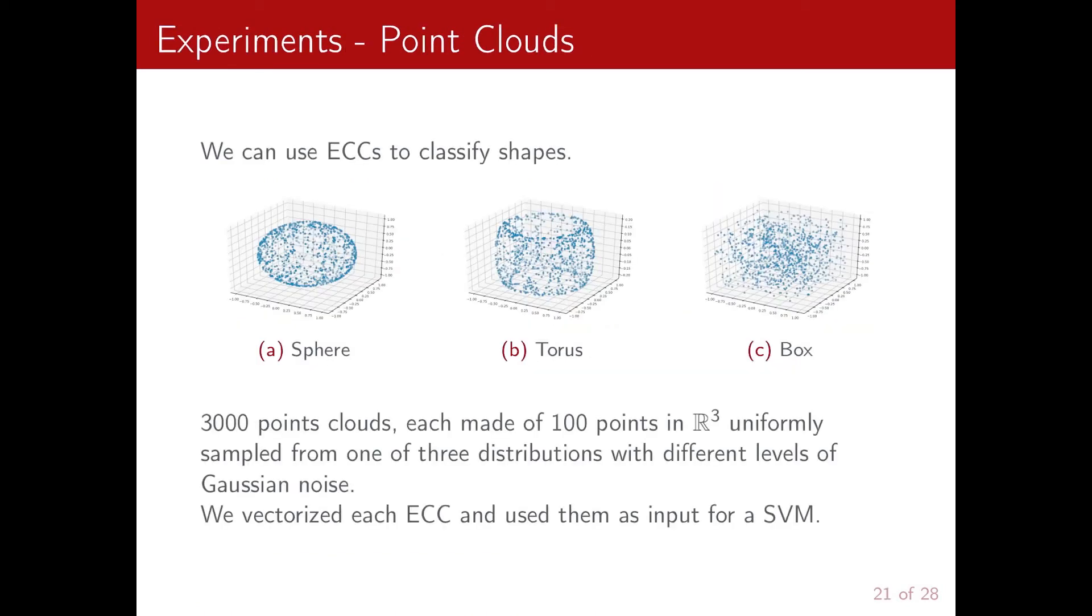So in the last minutes, I want to show you some classification experiments where we use the Euler characteristic curves as a feature. So the first one is a toy example where we tried to classify shapes. So we created an artificial dataset with 3,000 point clouds, each made of 100 points in 3D, that were uniformly sampled from one of three objects: a sphere, a torus, and a box.